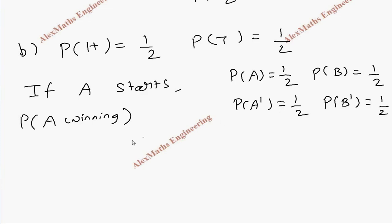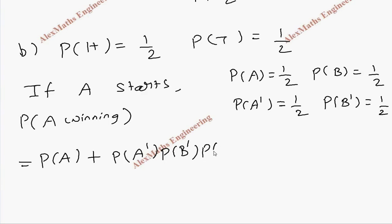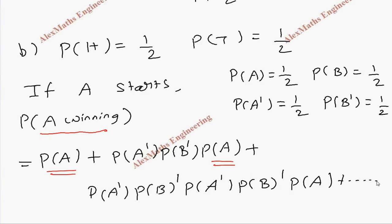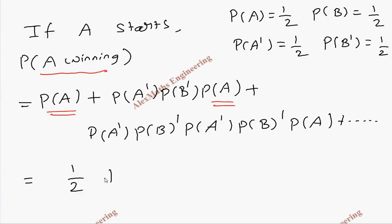We are going to write the series for P(A winning). When A tosses and gets head immediately — that is 1/2. Or A does not win (gets tail), B does not win (gets tail), then A wins — that adds terms. Before A wins, everyone must not get a head. In the third case: A does not win, B does not win, A does not win again, B does not win again, then A wins. The series continues in this pattern.